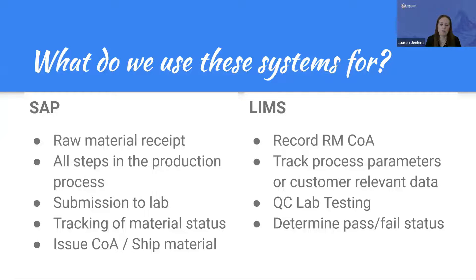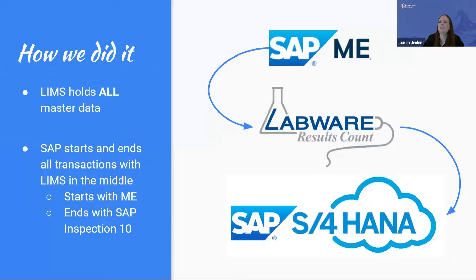Typically only the quality team touches LIMS. Our master data is also held in LIMS, which provides more security and reduces the risk of unauthorized access to master data. The basic flow starts with SAP ME, passes through LabWare LIMS, and ends in SAP S/4HANA. SAP starts and ends all transactions; LIMS is in the middle, but all transactions pass through LIMS at some point, and all of our certificates of analysis ultimately originate there.